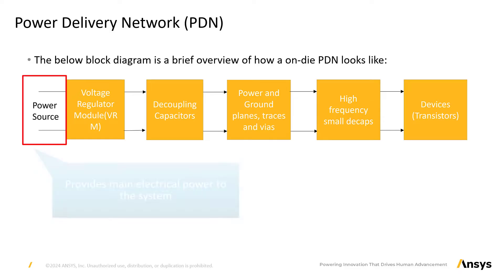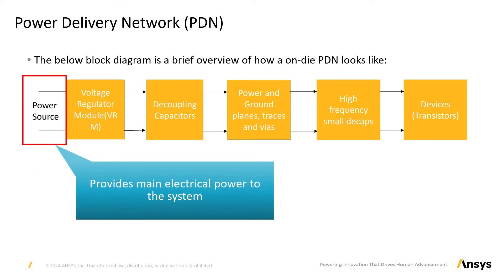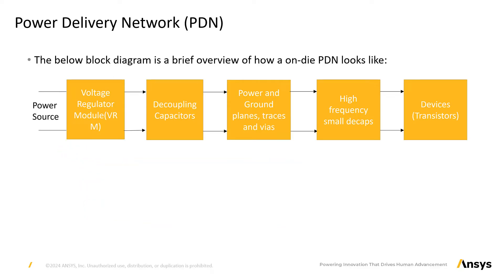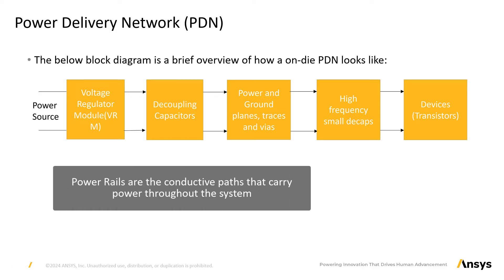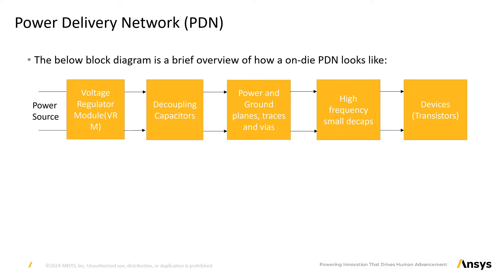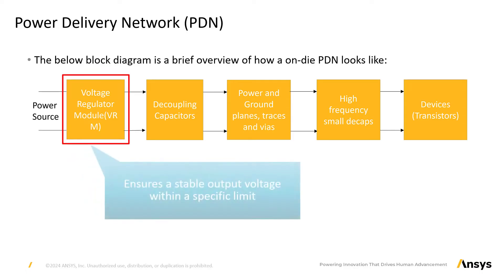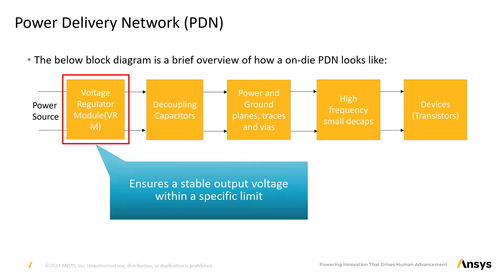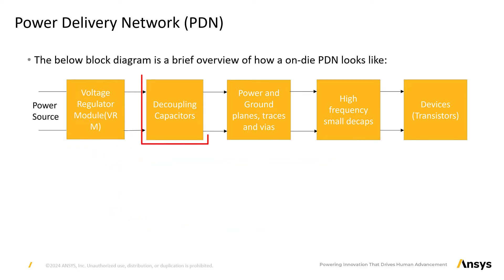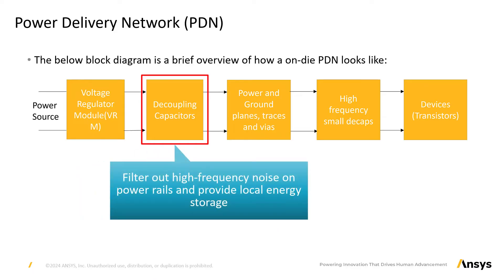Let's delve into the components of the power distribution network as depicted in the block diagram. Power source: this can be a battery or power supply whose primary function is to provide main electrical power to the system. Power rails: these are conductive parts that carry power throughout the system, designated for specific voltage levels such as 5V or 3V, often referred to as power and ground domains. Voltage Regulator Module (VRM): this ensures a stable output voltage and that the supplied voltage is within a specified limit. Decoupling capacitors: these filter out high-frequency noise on power rails, provide a local energy reservoir, and stabilize voltage levels during rapid changes in current during operation of an integrated circuit.